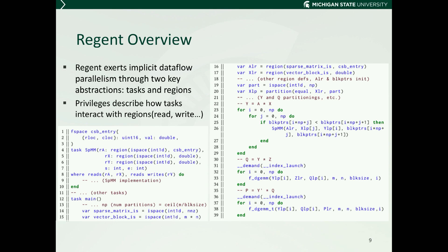Regent, another AMT model, extracts implicit dataflow parallelism through two key abstractions: tasks and regions. Tasks are functions marked as eligible for parallel execution, and regions are collections of structured objects that can be recursively partitioned. Tasks in Regent are required to describe how they interact with each region they take as argument by declaring privileges such as read, write, or reduce, to allow Regent to discover parallelism. In line 33, for example, we call the linear combination kernel on the partitioned Y and Q blocks, where the kernel declares a read privilege on the block of Y and a write privilege on the block of Q. Due to the read privilege on Y, all the writes must be performed on it first, meaning the task will only become available after execution of the corresponding SpMM tasks, as in HPX.